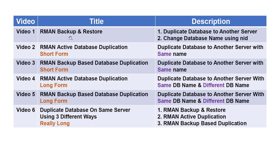To duplicate the database, Oracle gives you two different methods. One is called active database duplication and another one is backup-based database duplication. So there will be two videos that I'll upload — one based on active database duplication where we duplicate the database to another server with the same name, and another based on backup-based duplication where we also duplicate to another server with the same name.